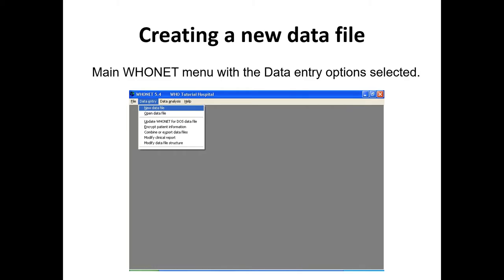Subsequently you either choose Open Data File or at the bottom of the menu you'll see the list of the most recently opened files — Word and Excel do the same thing. This saves time in finding files that already exist.